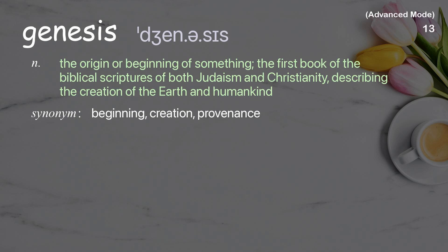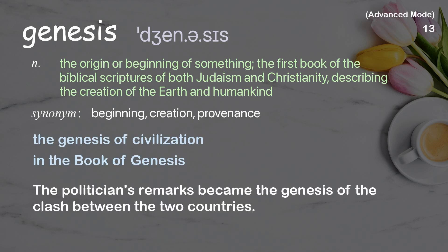Genesis: the origin or beginning of something; also the first book of the biblical scriptures of both Judaism and Christianity, describing the creation of the earth and humankind. Examples: the genesis of civilization, in the book of Genesis. The politician's remarks became the genesis of the clash between the two countries.